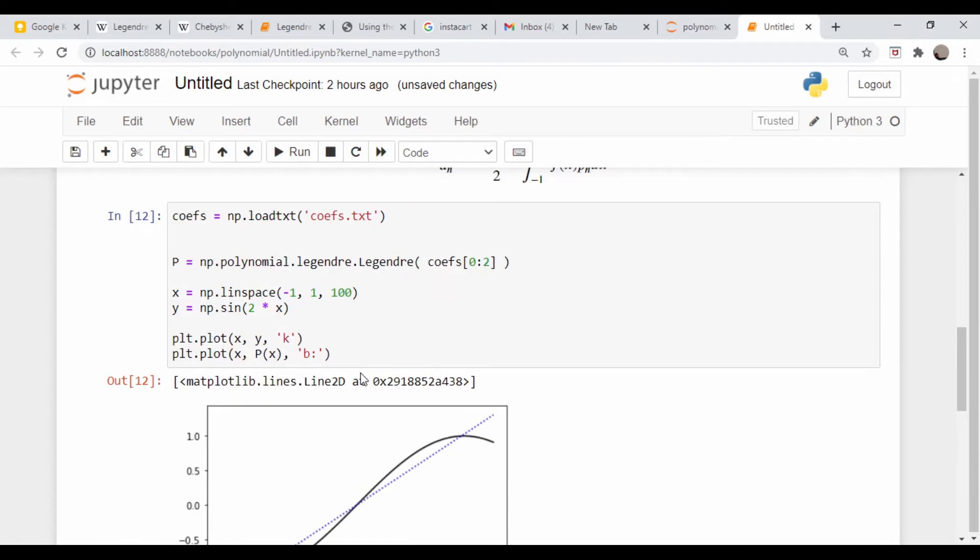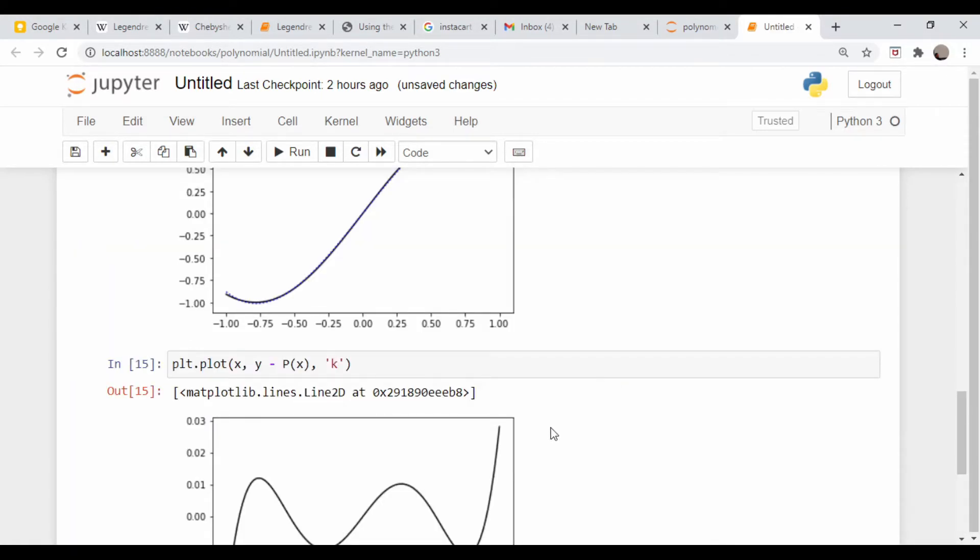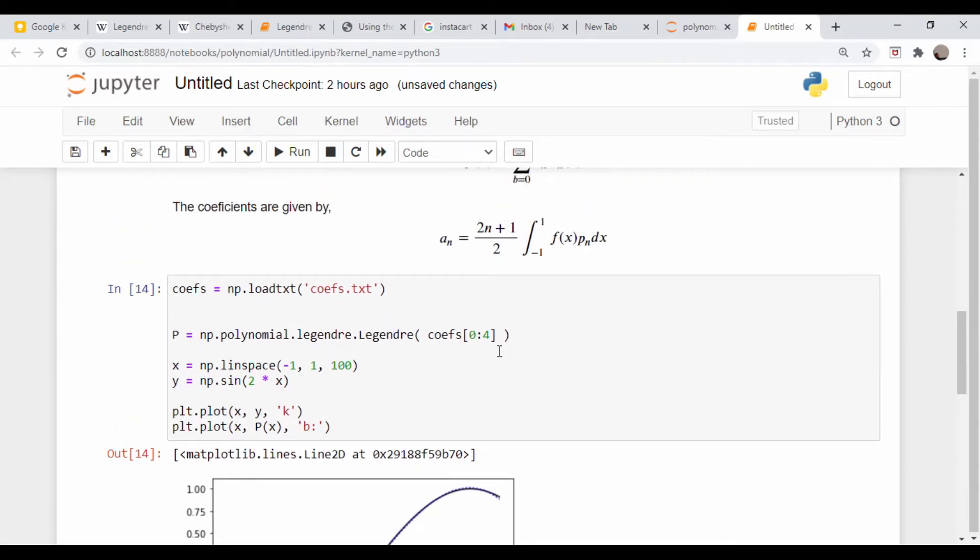So let's come up here and add in a couple more terms. Let's just make this 4. Well, that looks substantially better. Let's plot the error, so now we're down to 0.0203, so we're a couple percent off.